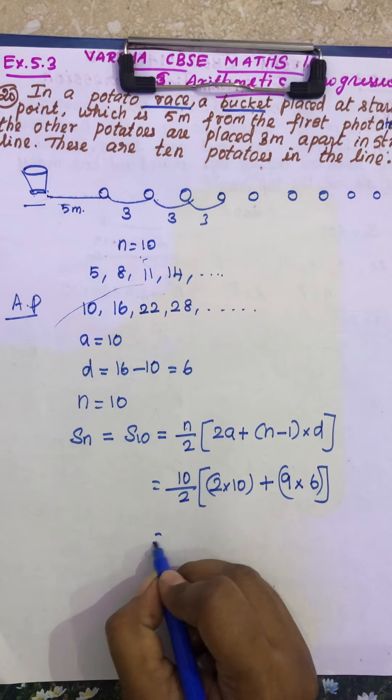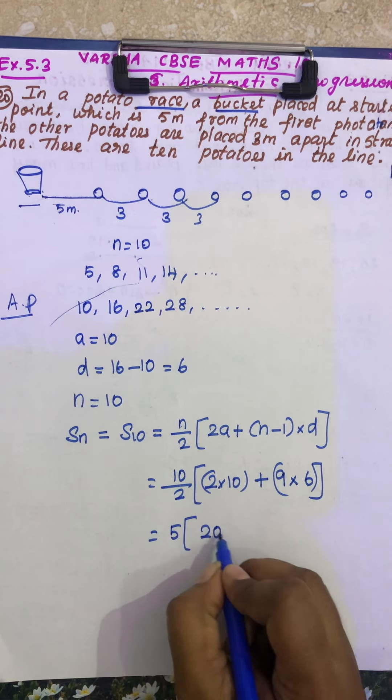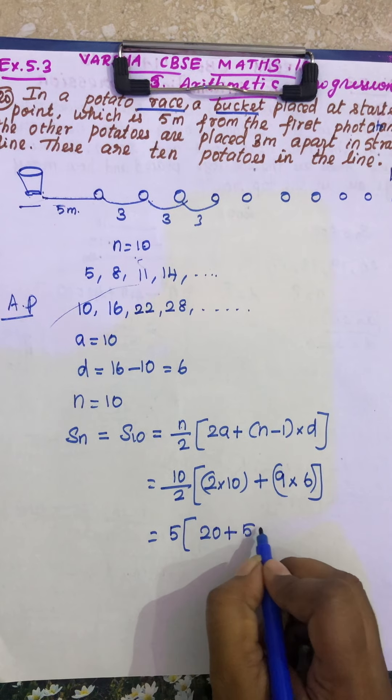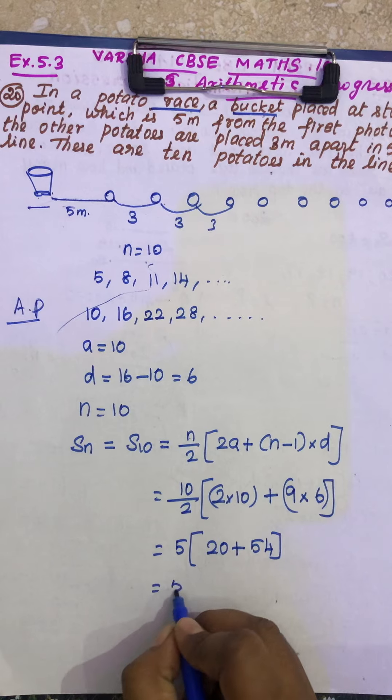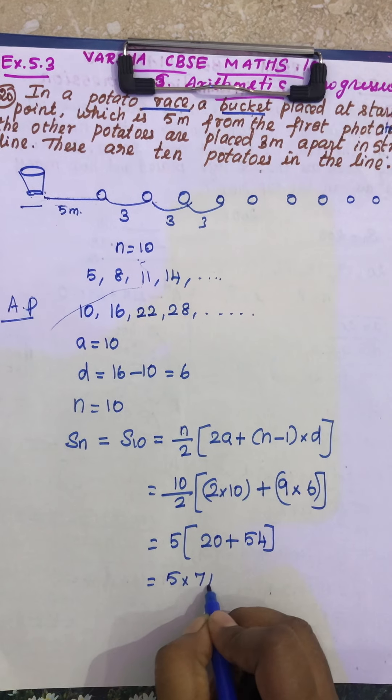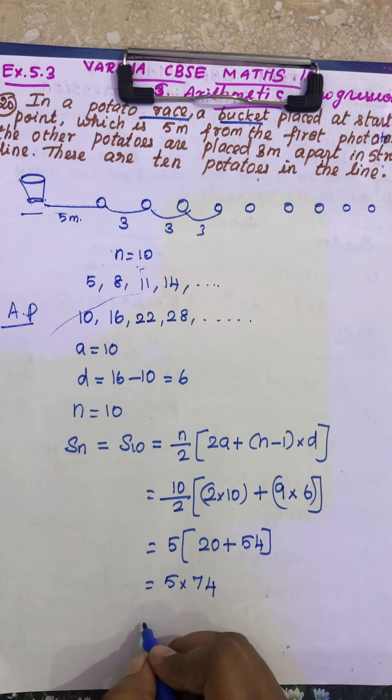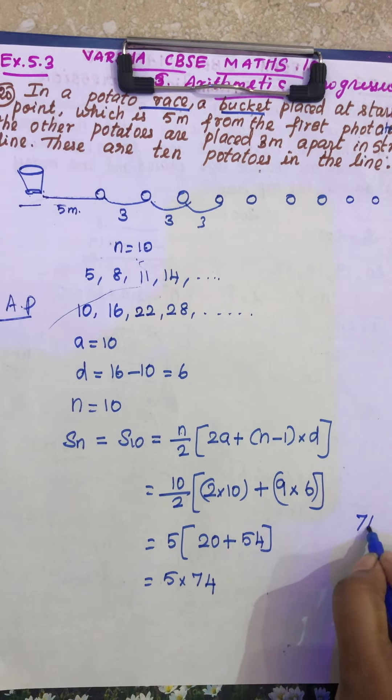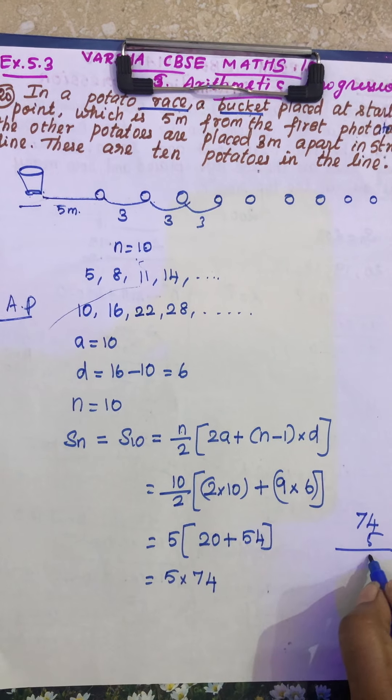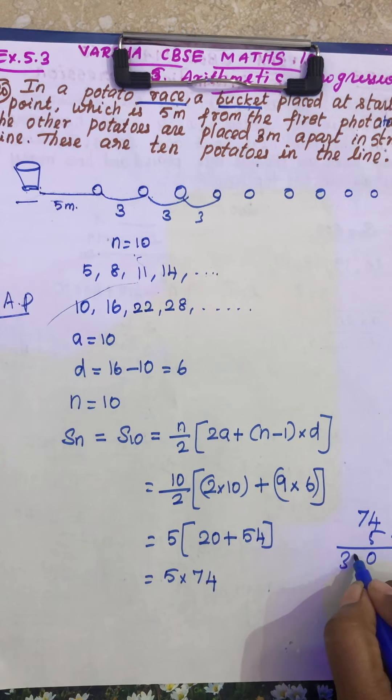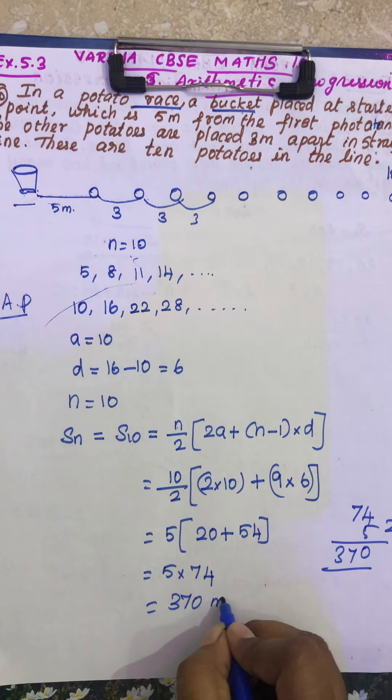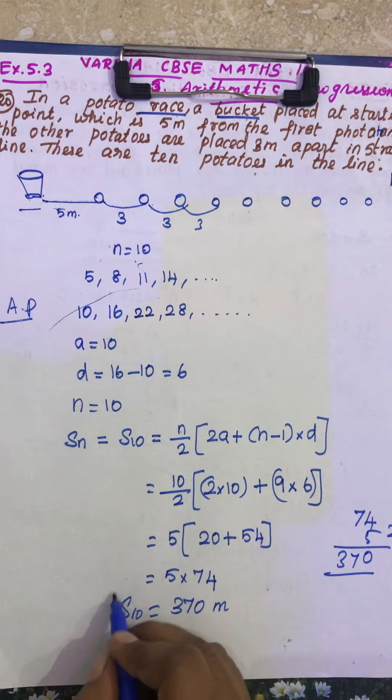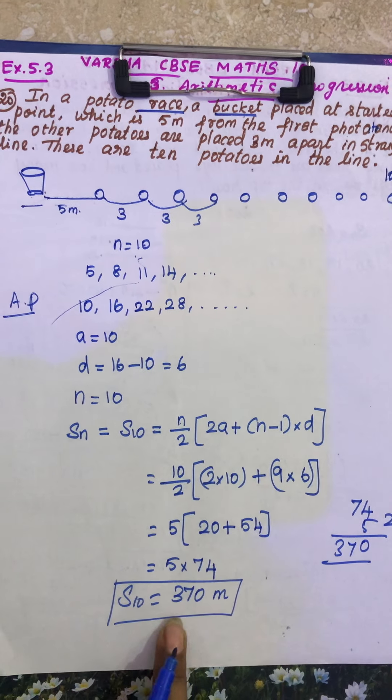See, this is multiplication, so this is 5, 20 plus 9, 6 are 54. So 5 into, this is 74, so if you multiply, that's your answer. See, this is 20, 37, so 370 meters, so she has to run totally 370 meters.